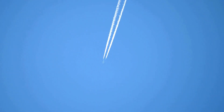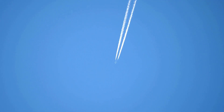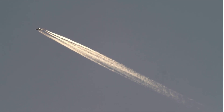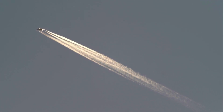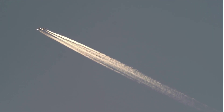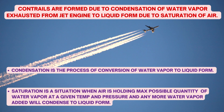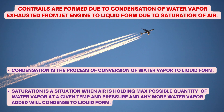Every one of us in our lifetime has seen a long white condensation trail behind commercial jet airplanes flying very high in the sky. Many times these trails are seen tens of kilometers behind the airplane, and the trails continue to be seen for a fairly long duration of time. They are known as condensation trails, or in short, contrails.